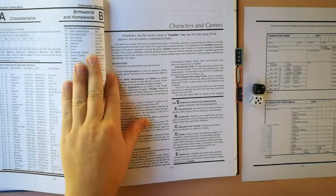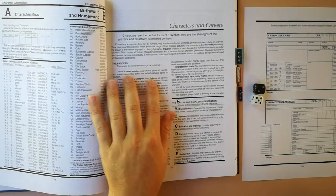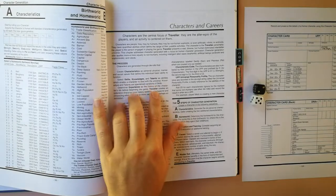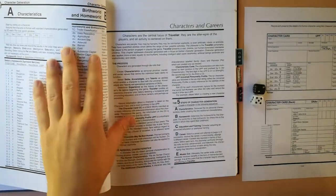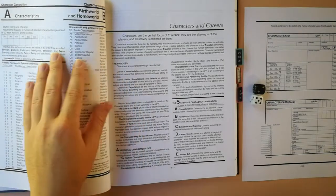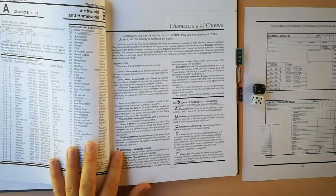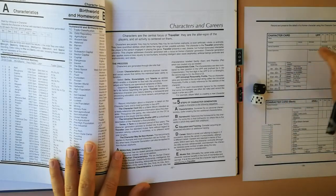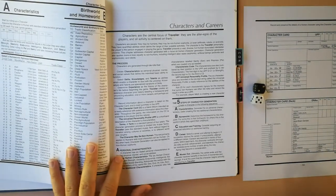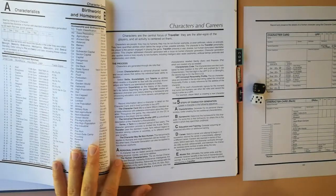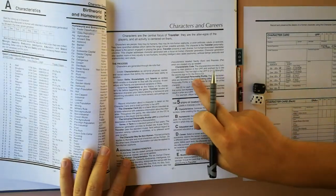Characters and careers. Characters are generated through die rolls that create characteristics, select skills, knowledges, and talents as abilities which enable a character to deal with the universe. Determine experience as the history of the character's life before beginning the game. This is the notorious life path character generation minigame. Record information on the character card and in brief summary in the UPP.